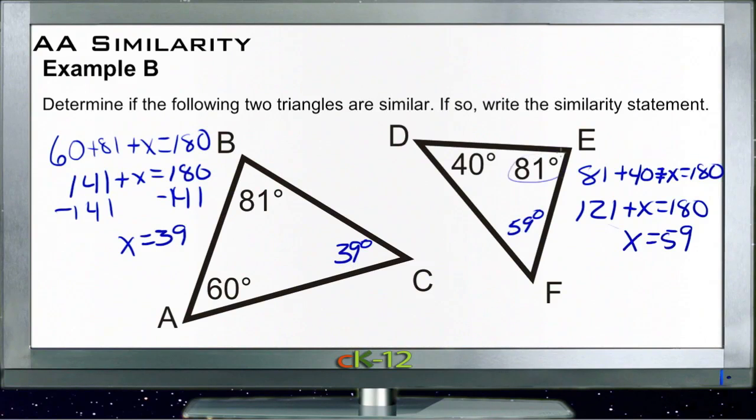So X must be 59, which means this angle here is 59 degrees. We have one angle that matches, the 81 degrees, but the other two angles do not. We have a 39 which almost matches the 40 and a 59 which almost matches the 60, but not quite. So these two triangles are not similar.